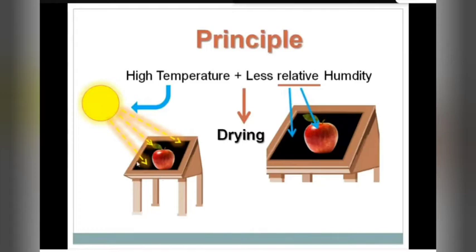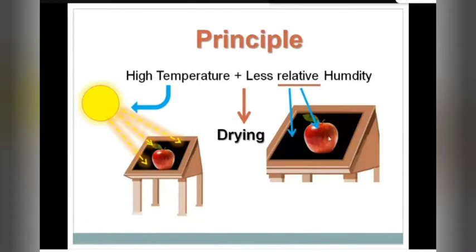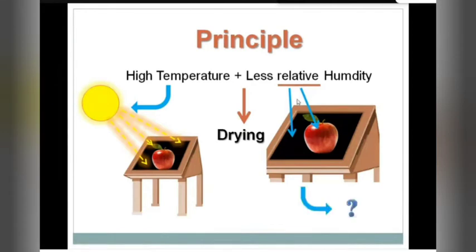Nature loves balance — everything moves from higher concentration toward lower concentration. If the moisture inside the fruit is higher than the moisture inside the internal environment of the solar dryer, then moisture from the fruit will be driven out into that internal environment, and in this way the fruit dries up. To achieve this, you must maintain a less relatively humid environment in the drying chamber — the humidity inside the drying box should always be less than that of the fruit.